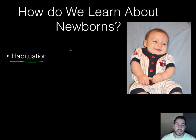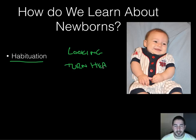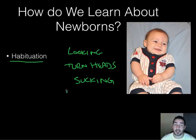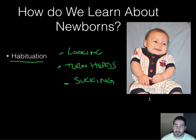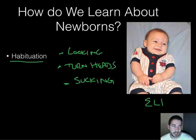What are babies good at? They're good at looking, turning their heads, and sucking. When a baby does one of those things, we know it's responding. So we test things — we put sensors on pacifiers, see if they're turning their head, time how long they look at things. By testing these behaviors we're answering questions about what's going on in that baby's brain, which is pretty cool.